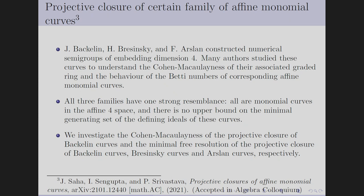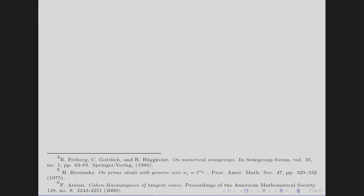To understand how the projective closure behaves, we took three important families from the literature with notable behavior. All these families share one strong resemblance: they are all in affine dimension 4 space, and there is no upper bound on the minimal generating set of the defining ideal of these curves. We investigated the Cohen-Macaulay property of the projective closure. In the first family, the Betti numbers of the affine curve and of the projective closure are the same and both are Cohen-Macaulay. But for the Bresinsky family, the Betti numbers differ, and the last Betti number for the Bresinsky curve is unbounded, whereas for the projective closure it is one. Similarly, for the Arsalan family the Betti numbers are totally different.